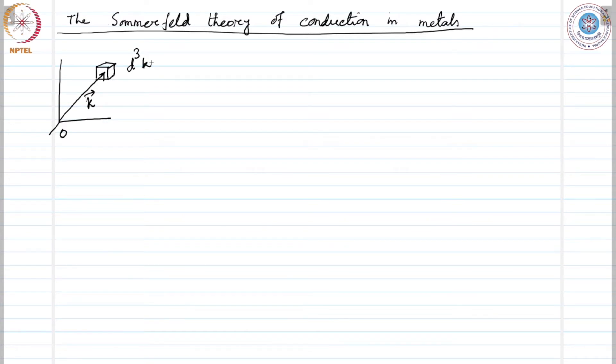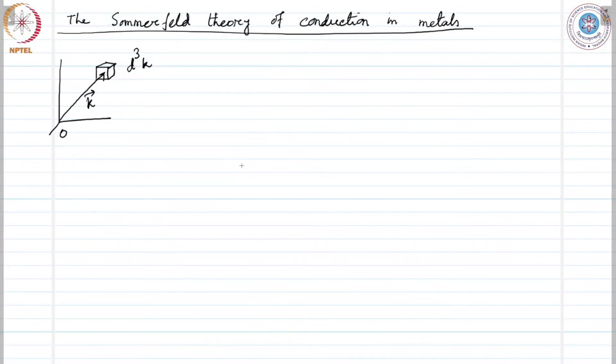If we allow for the 2-fold spin degeneracy, that means one state can be occupied by electrons of 2 different spins, then the number of electronic levels in the volume element would be given as V over 4 pi cubed D3K. This is the number of electronic levels.